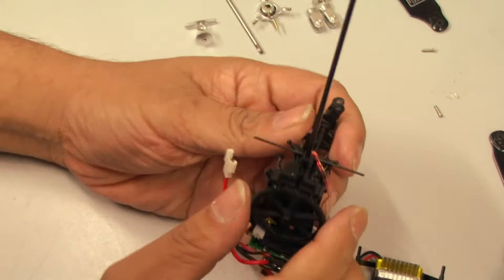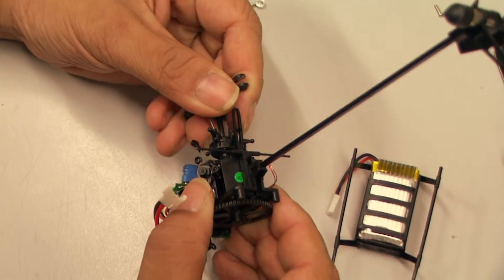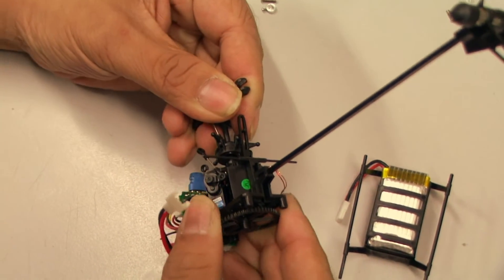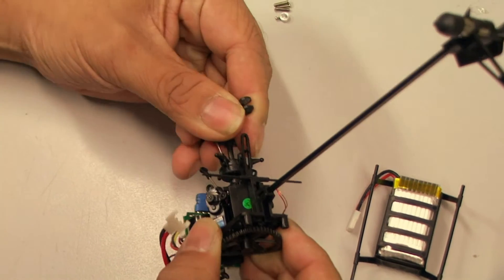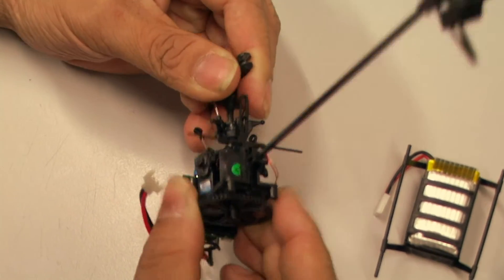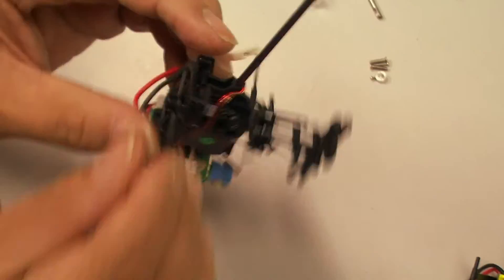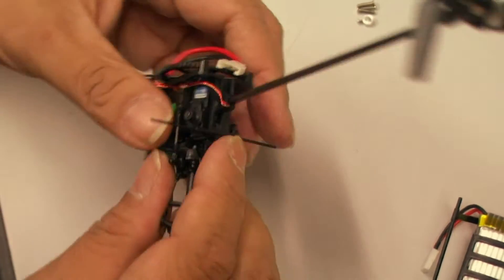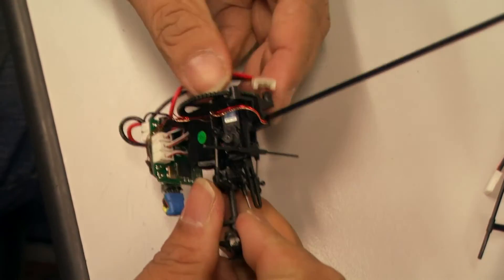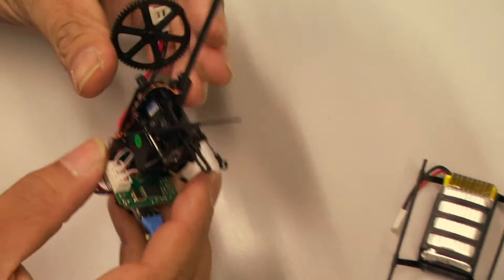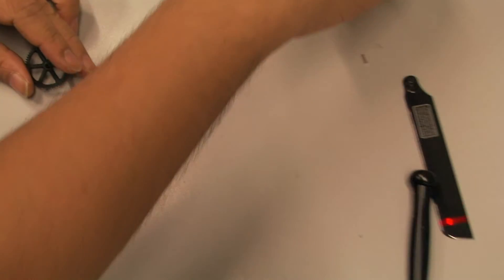And then by holding the main gear, pull the main shaft to remove the complete head assembly. It's coming out. Sometimes it's a bit tight, it may take some force to remove it. Yeah, there you go. Okay, now we can set all this stuff aside.